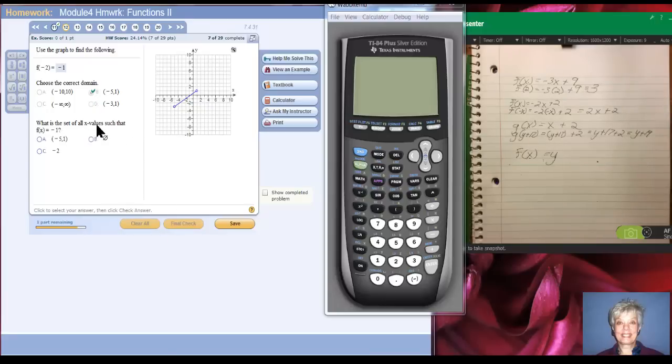Okay. What is the set of all the x values such that f of x equals negative 1? What they're saying is, I'm looking for the point where y is negative 1 and then you tell me what x is. So let's look on this graph for where y is negative 1. Well, then x is negative 2. Splendid.